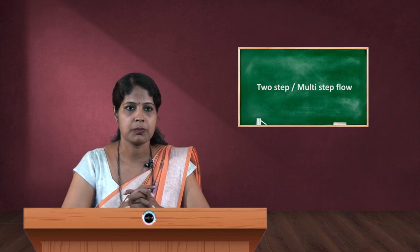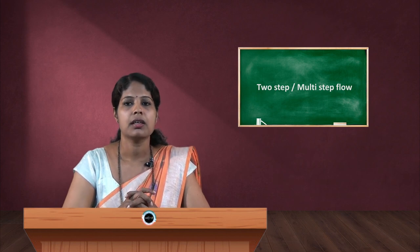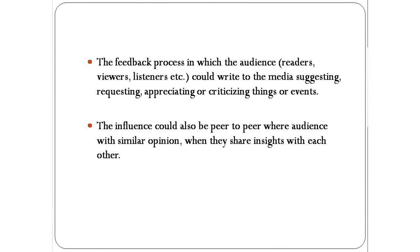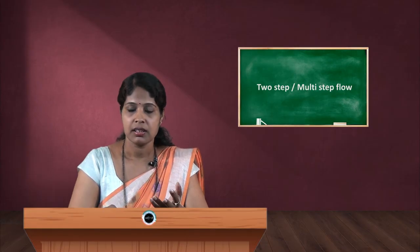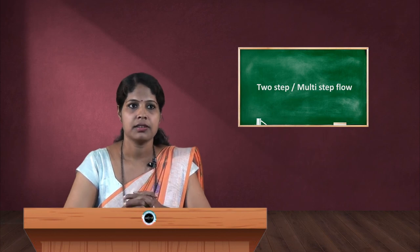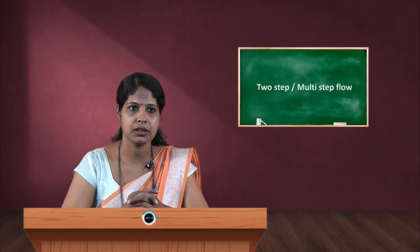There is a feedback process in this communication. People could write to media suggesting, requesting, appreciating, or criticizing things or events. The influence could also be peer to peer, where audiences with similar opinions, cultural backgrounds, and ideology share their information and insights. In multi-step flow concept, there are many relay points where information can reach people directly from mass media, and it can be second-hand, third-hand, or fourth-hand information.